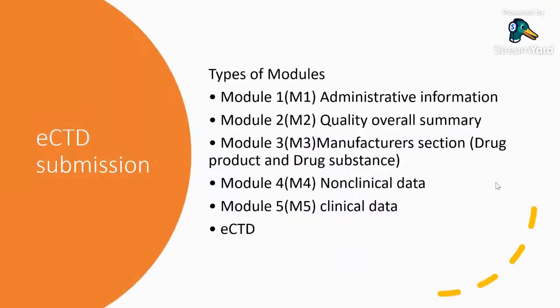Coming to the modules — as we were discussing about CTD, CTD has got five modules, as everybody knows. Modules one, two, three, four, and five. We will cover what content will be there in each module, how to arrange content in each module, and how to write as per the guidelines. Each and everything is precisely defined and we have to be very technically sound.